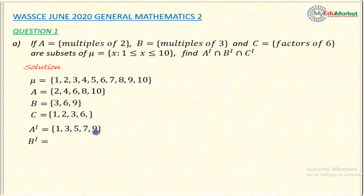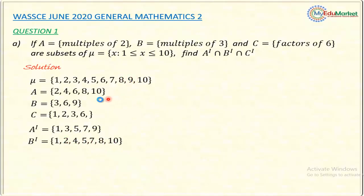Then B prime or B complement — those elements that are in the universal set but not presently in set B. So B complement = {1, 2, 4, 5, 7, 8, 10}.